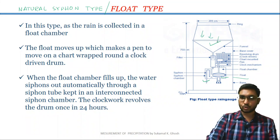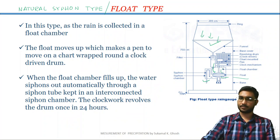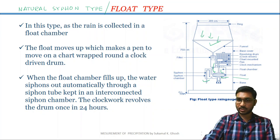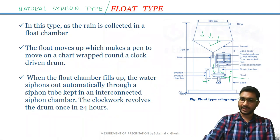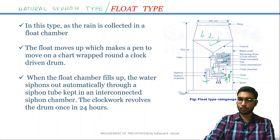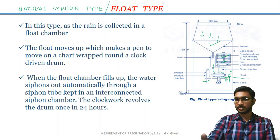When precipitation occurs, through this funnel water or the rainfall water comes into the float chamber. When the float chamber fills up with water, the float moves up. When the float moves up, it makes the pen move on the chart which is wrapped around a clock-driven drum. In this way, the mass rainfall curve is drawn on the paper.